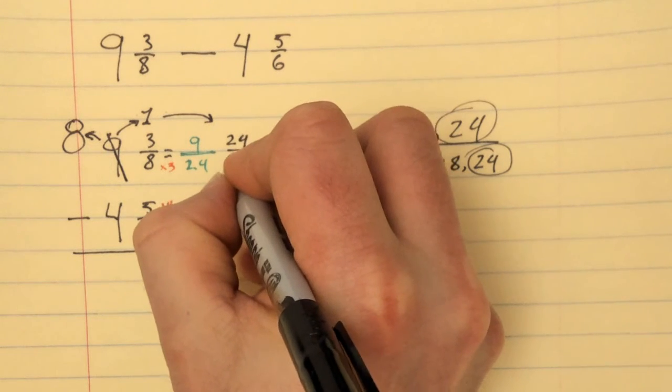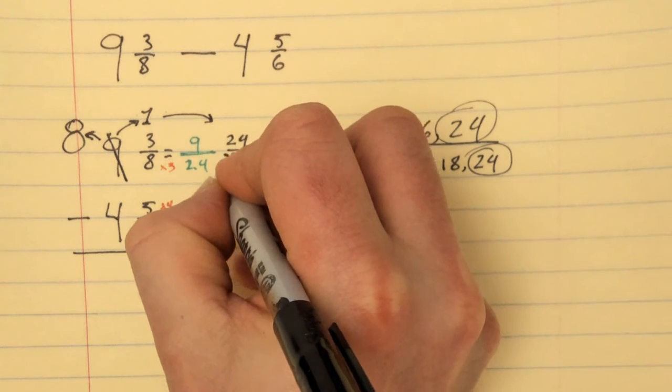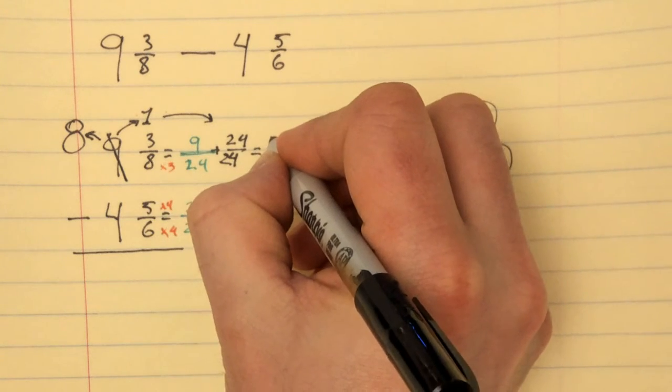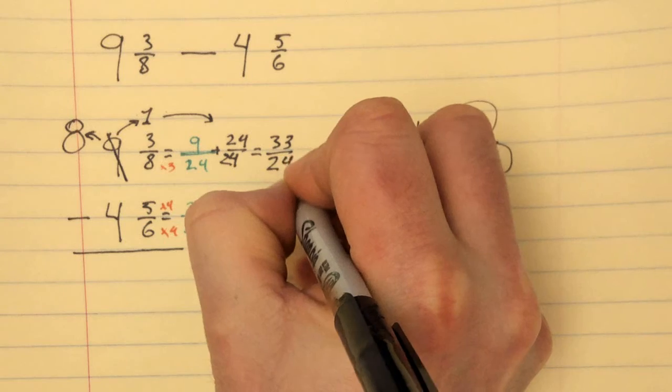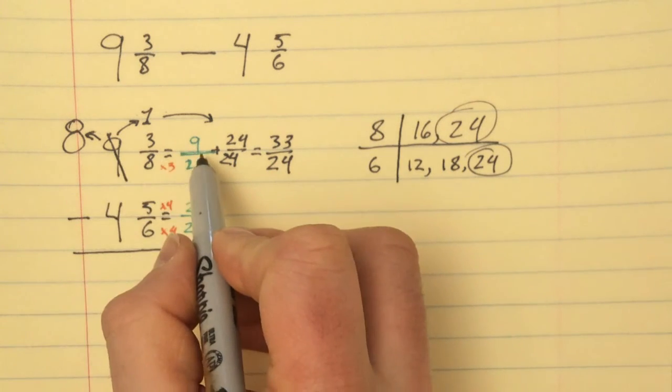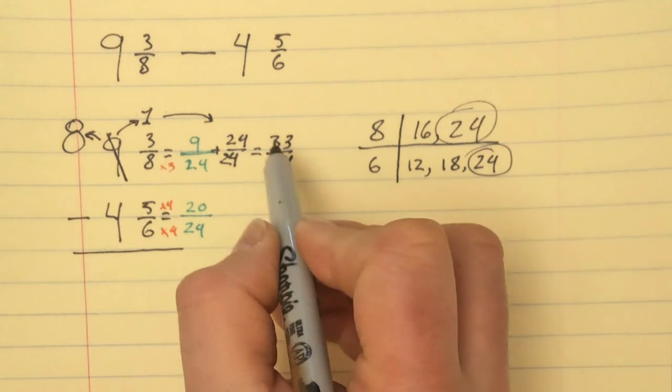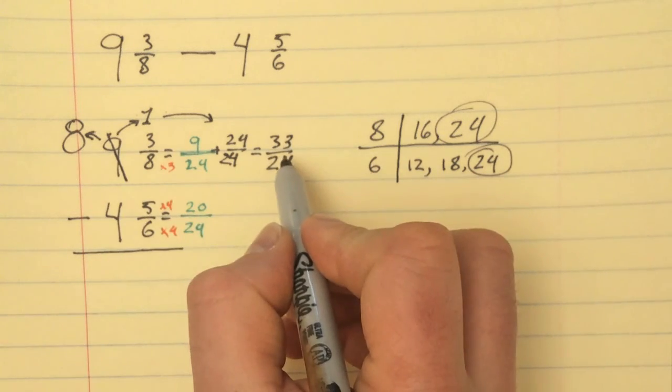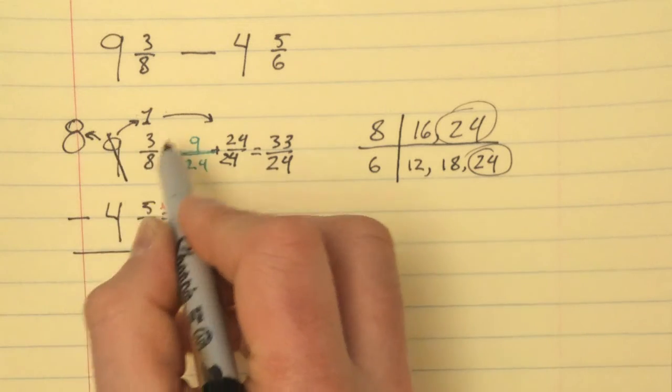24/24, right? We're going to add that to the 9/24. It becomes 33/24 now. So now, instead of 9 and 9/24, we have 8 and 33/24. So if we were to take 8 and 33/24 and rewrite it properly, it would then become 9 and 9/24, right? So we're kind of like just taking it apart. Anyway,